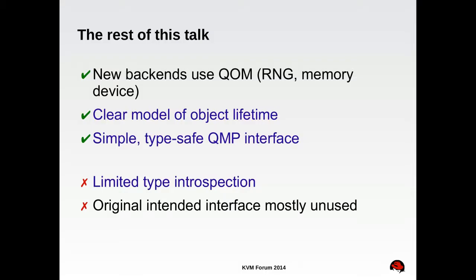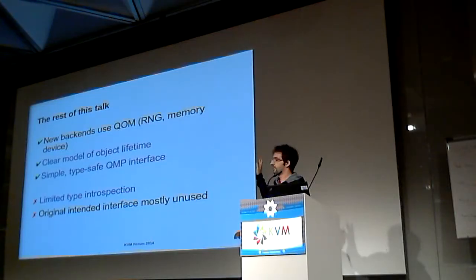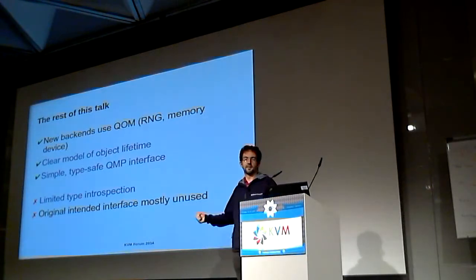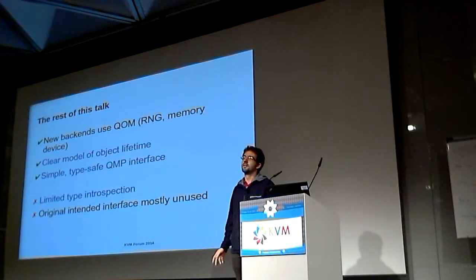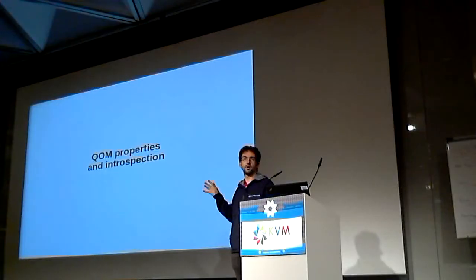So for the rest of this talk, I will look at what went wrong and what went well unexpectedly, and let's see what happened and why QM delivered something else than what it was supposed to deliver. This first part will work out how QM properties work and why introspection is not there yet.